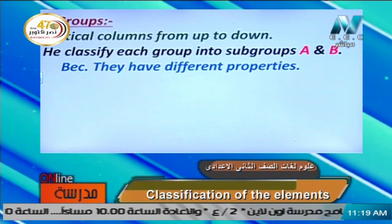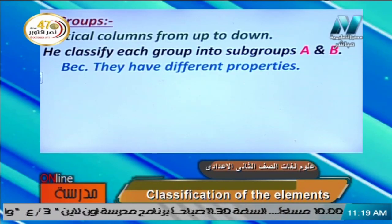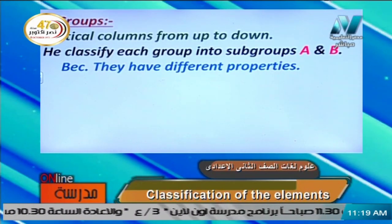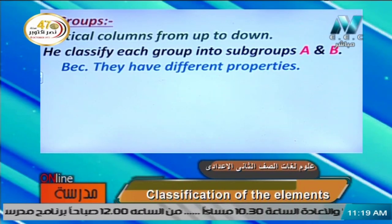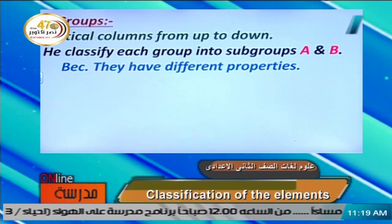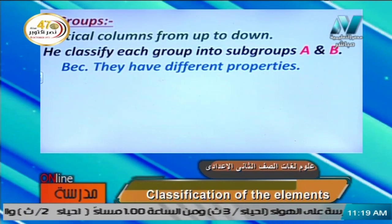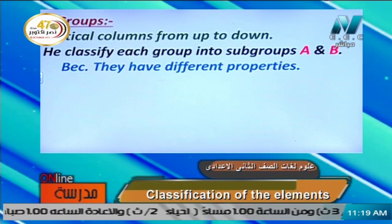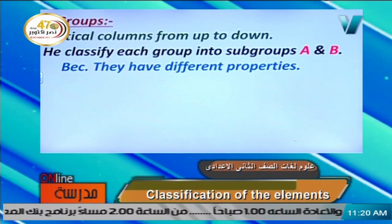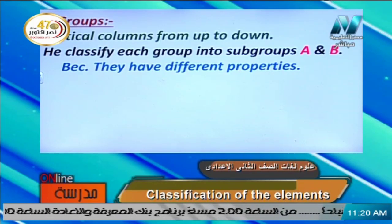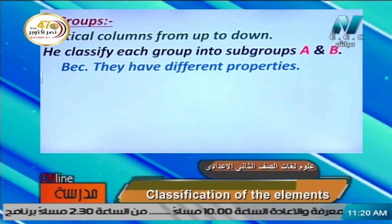Mendeleev classified each group into two subgroups, A and B. Why? Because elements in the two subgroups have different properties. So each group in Mendeleev's periodic table is divided into two subgroups, A and B, because they have different properties — not similar. They are classified into two subgroups as branches from the same main group.